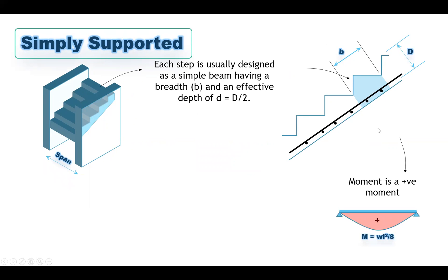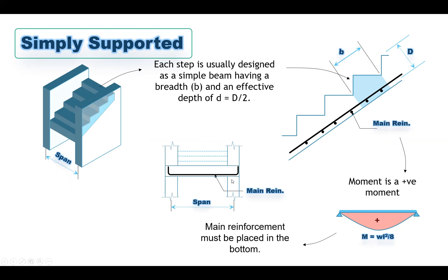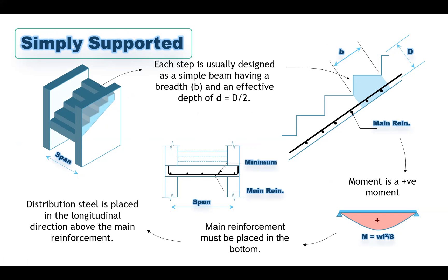We design the step as simply supported on the wall and wall, or two beams. With a uniform load w, the moment is WL²/8 — a positive moment — meaning tension is at the bottom. Therefore, the main reinforcement should be on the bottom side. In the longitudinal direction, minimum steel reinforcement is used as distribution steel.